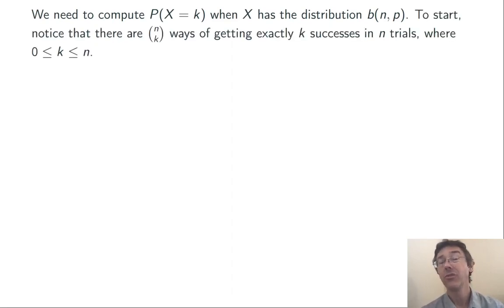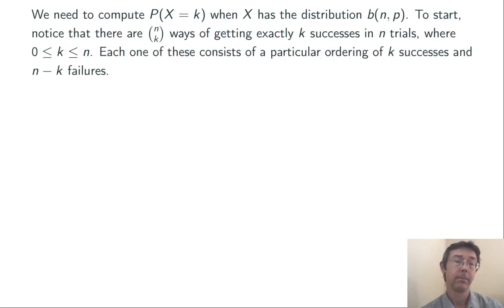To start, notice that there are n choose k ways of getting exactly k successes in n trials, where k is between zero and n. Each one of those consists of a particular ordering of k successes and n minus k failures. So the probability of success is p, so we need a factor of p to the k to have k successes. The probability of failure is 1 minus p, so we need 1 minus p to the n minus k to get the probability of n minus k failures. Overall, the probability of k successes in n trials is n choose k times p to the k times 1 minus p to the n minus k. This is how we compute probabilities in the binomial distribution.